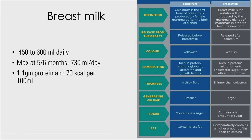Regarding breast milk: the daily output ranges between 450 to 650 ml, attaining its maximum output of about 730 ml per day at 2 to 6 months. Breast milk contains 1.1 grams of protein and 70 kilocalories per 100 ml.